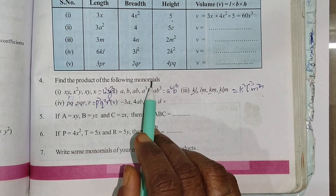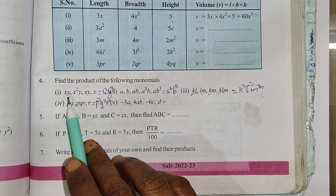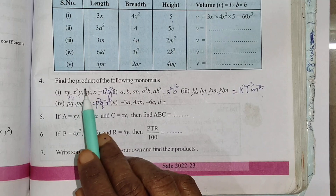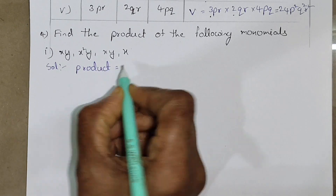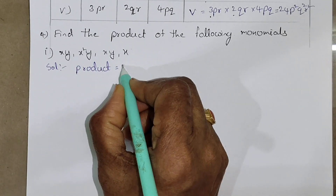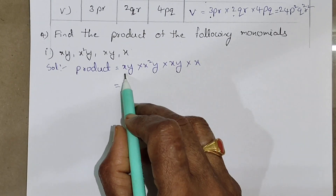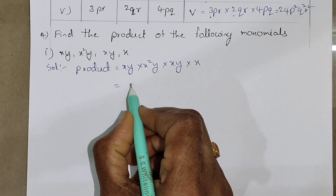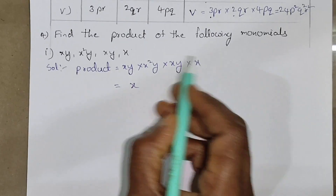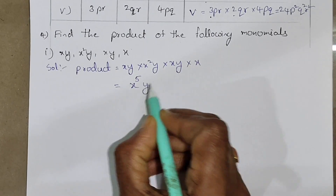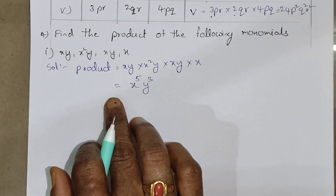Next, fourth question: find the product of the following monomials. First one: xy, x squared y, xy, x. We find the product: xy into x squared y into xy into x. Collecting x terms: x to the power 1 plus 2 plus 1 plus 1 equals x to the 5th. Collecting y terms: y to the power 1 plus 1 plus 1 equals y cubed. So the product is x to the 5th times y cubed.